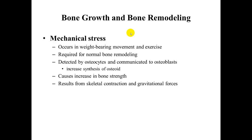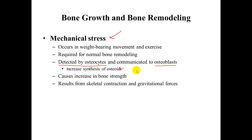One factor that affects bone growth and remodeling is mechanical stress, which occurs during weight-bearing movement and exercise. The more you do those activities, the more stress is placed on the bone and the more the bone has to respond — it is required for normal bone remodeling. This stress is detected by osteocytes, which communicate to osteoblasts to build bone. The osteoblasts synthesize osteoid, the organic component of bone, which is then calcified to increase bone strength, resulting from skeletal muscle contraction and gravitational forces.